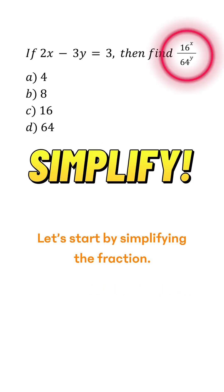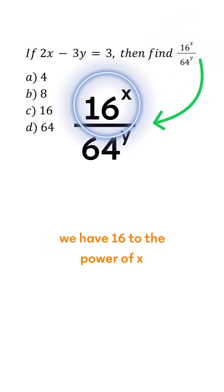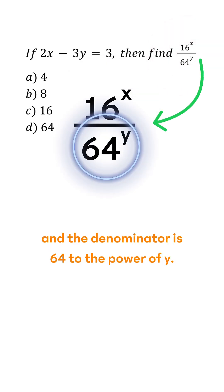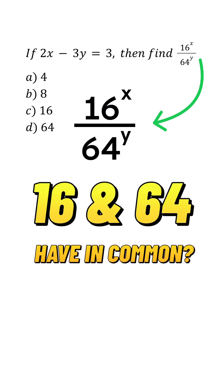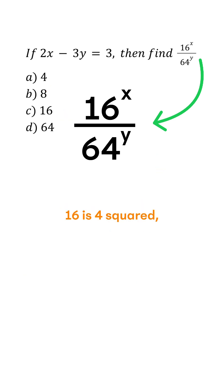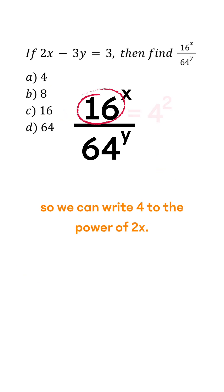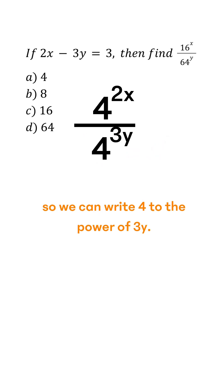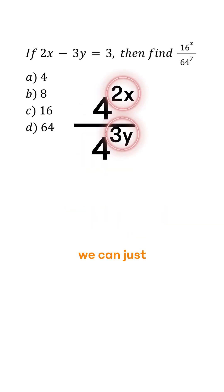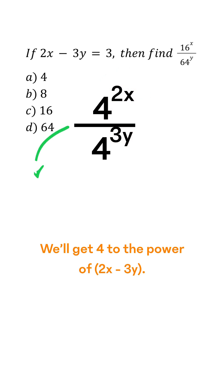Let's start by simplifying the fraction. In the numerator, we have 16 to the power of x, and the denominator is 64 to the power of y. What do 16 and 64 have in common? It's four, so we can write four as the base. 16 is four squared, so we can write four to the power of 2x. Similarly, 64 is four to the power of three, so we can write four to the power of 3y. Now as we have the same base for the exponents, we can just subtract the exponents. We'll get four to the power of 2x minus 3y.